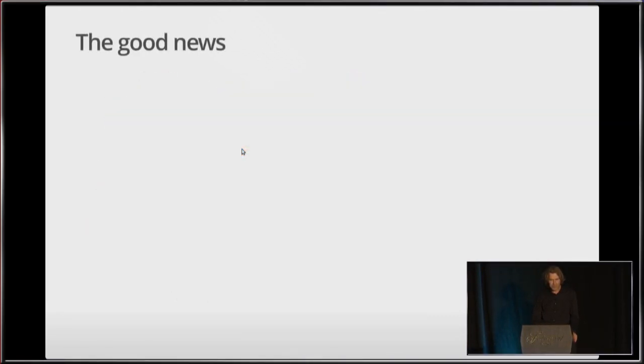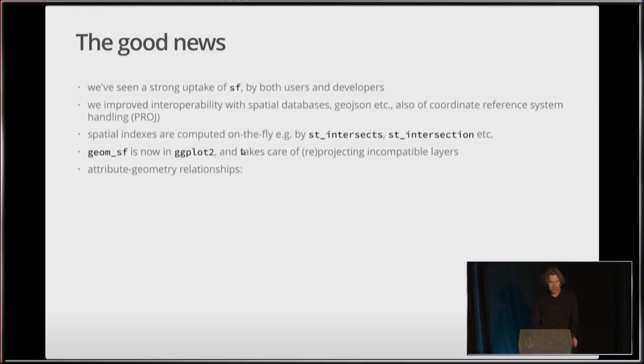So that was sort of caught up very well, that is the good news. There's a strong uptake of the simple features package by both users and developers, and we improved the interoperability with spatial databases, GeoJSON, and coordinate reference system handling in R. Spatial indexes are computed on the fly, for instance by ST intersect. And we have now plot support in ggplot2 that takes care of re-projecting incompatible layers.